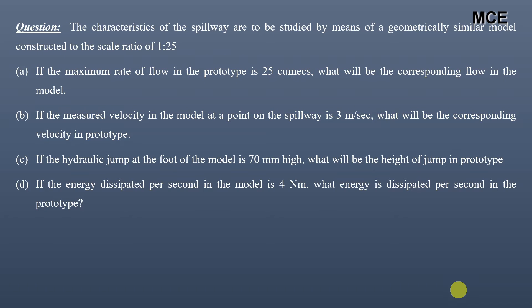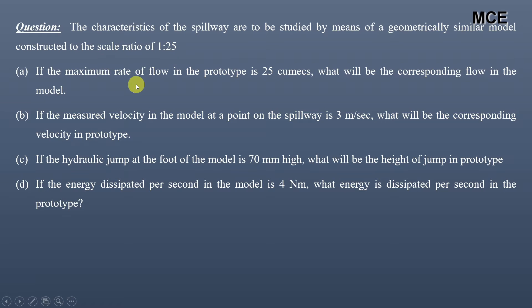Or where flow of a jet occurs from an orifice or nozzle. I have been given a question which states that the characteristics of a spillway are to be studied by means of a geometrically similar model constructed to a scale ratio of 1 to 25. If the maximum rate of flow in the prototype is 25 cubic meters per second, we have to find the corresponding flow in the model.